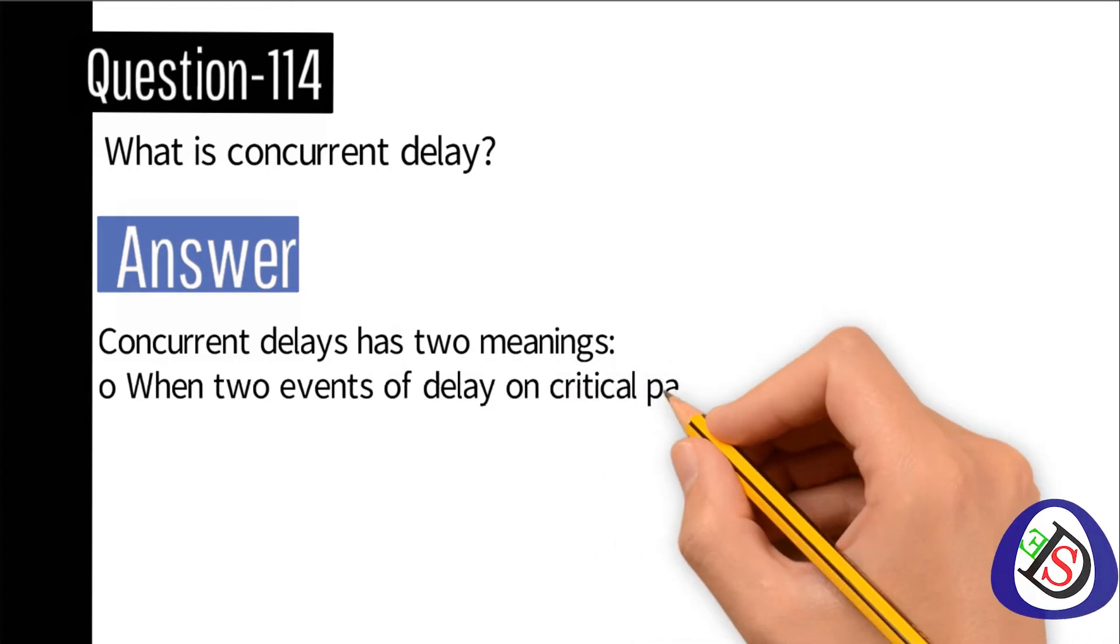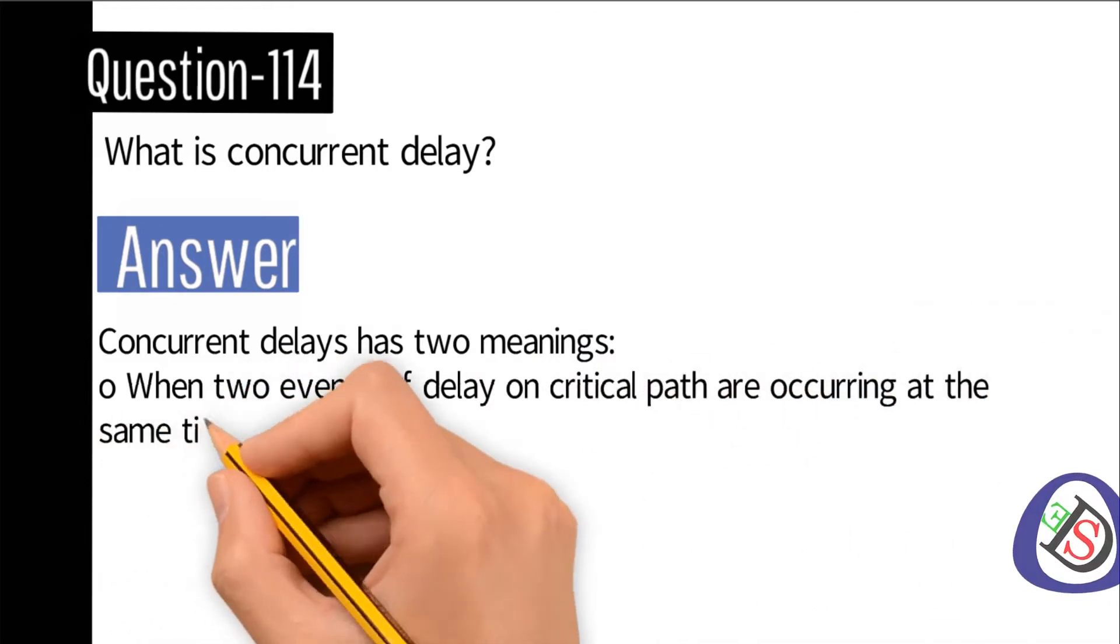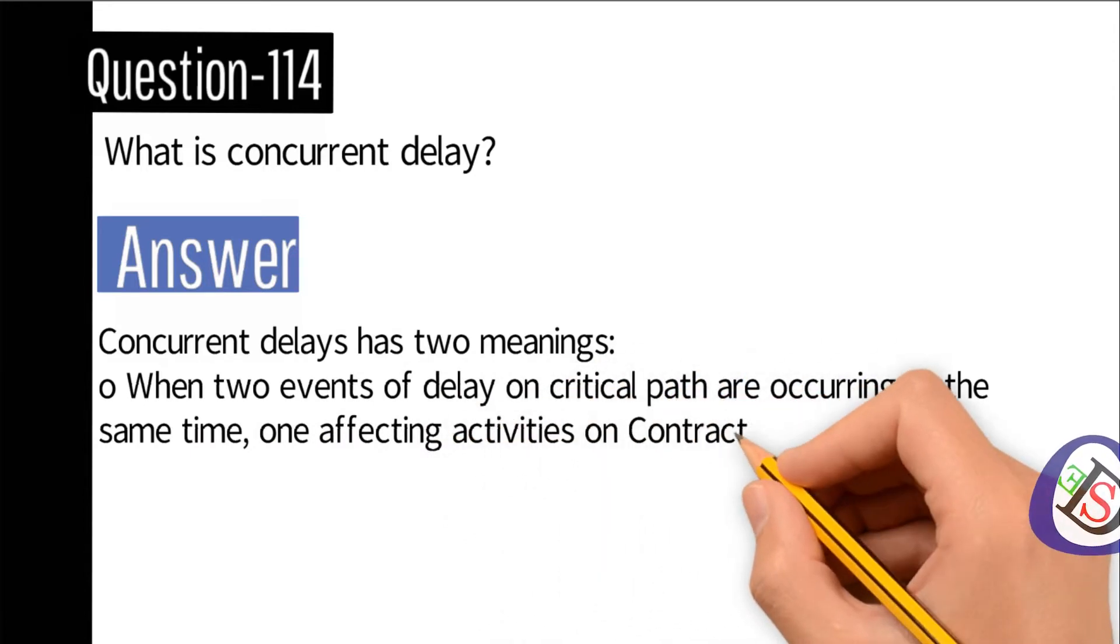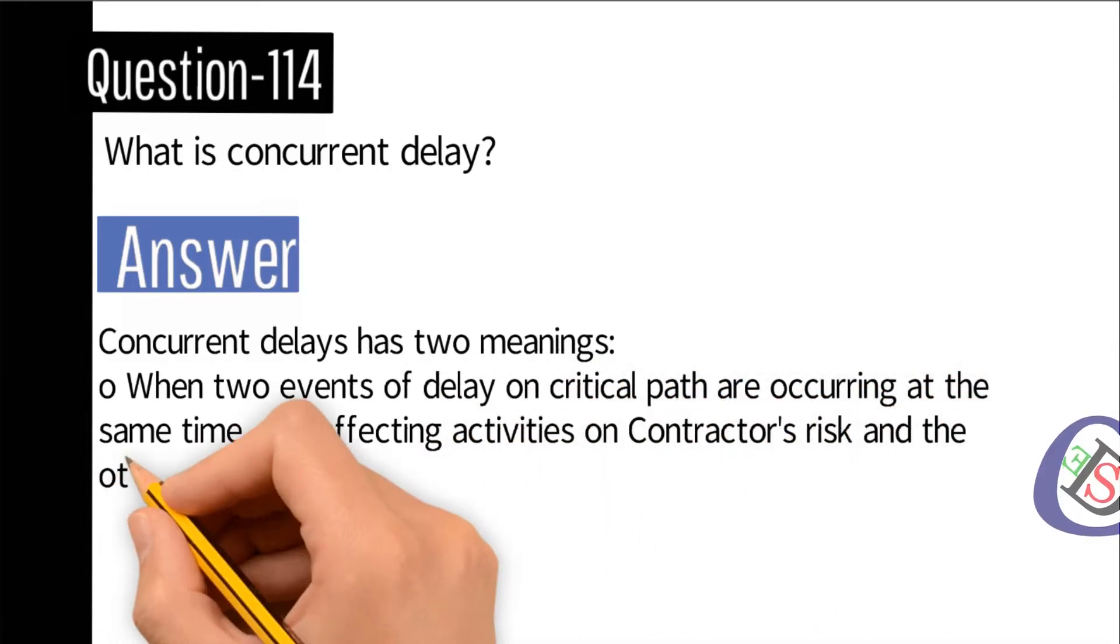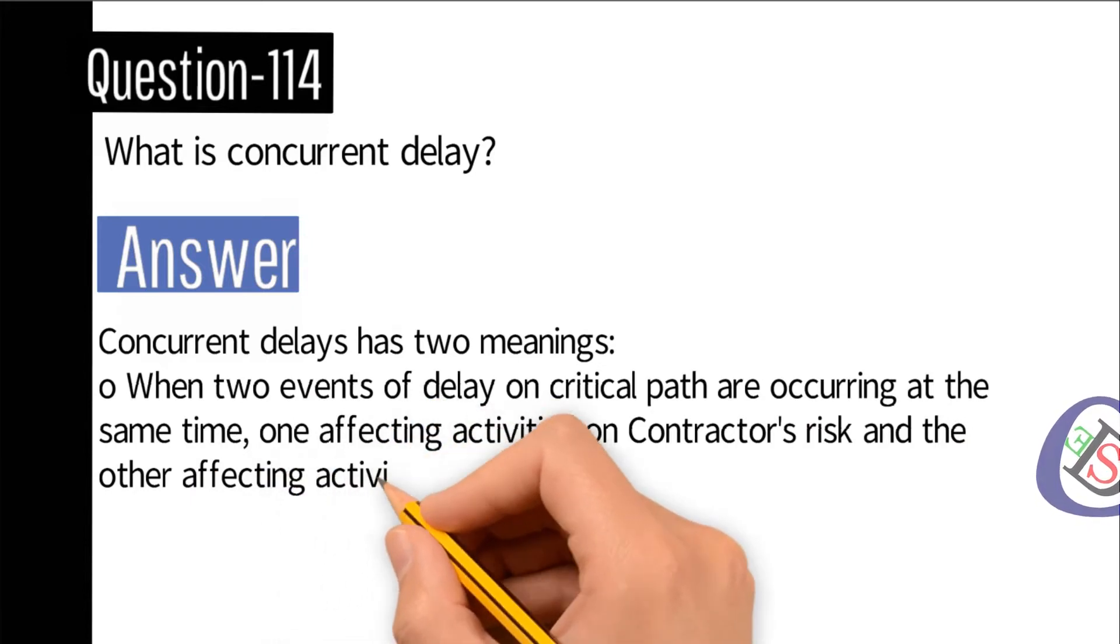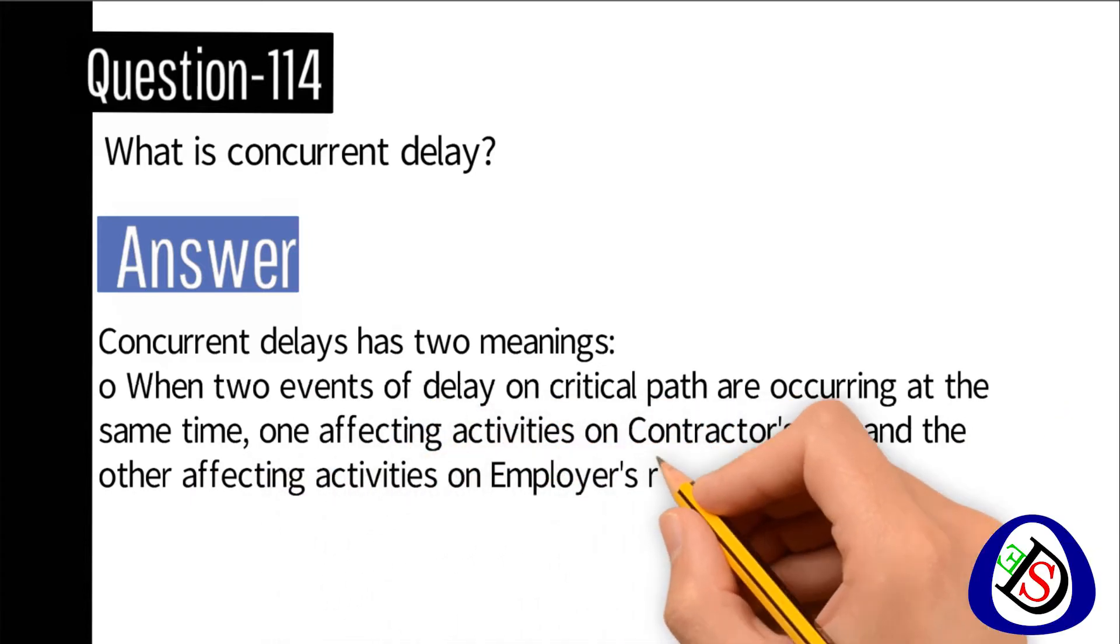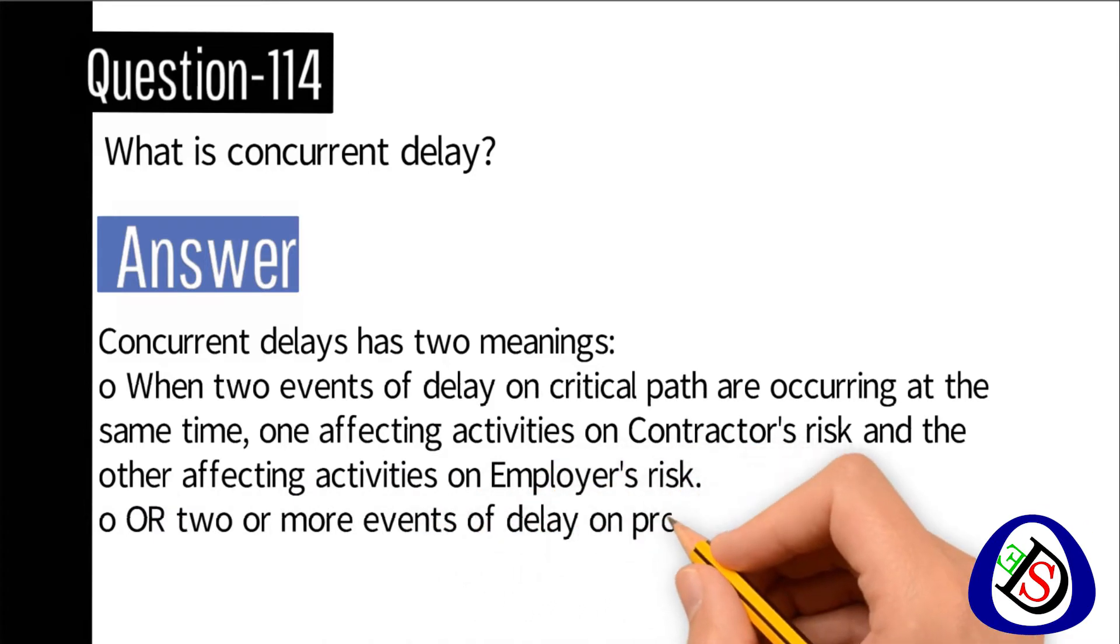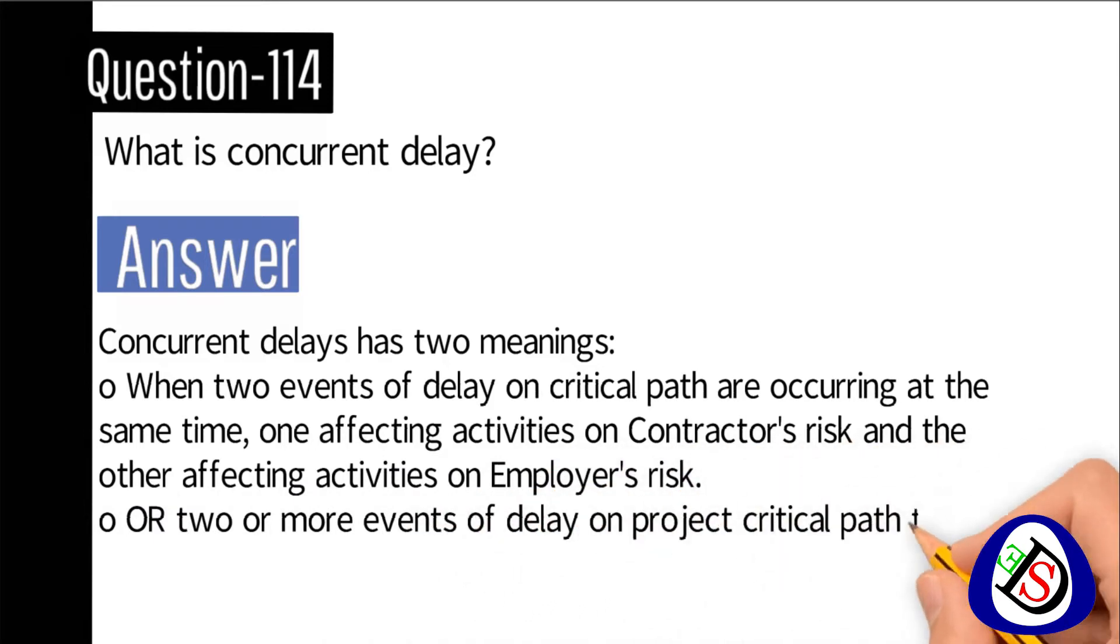One affecting activities on contractor's risk and the other affecting activities on employer's risk. Number two: two or more events of delay on project critical path that belongs to only one of these parties, contractor or client.